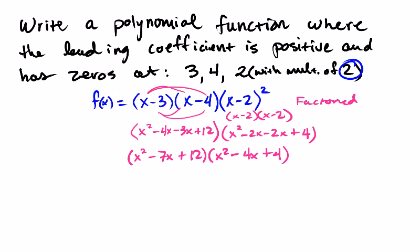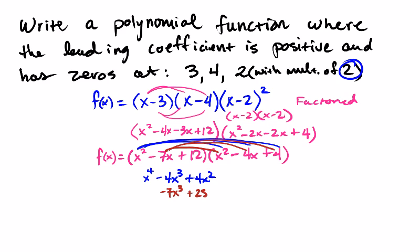And now you're going to have to foil some more. Well, not foil, but you're going to have to multiply it out. And the way you do that is you would multiply everything in the first by everything in the second. So this x² is going to get multiplied by every single thing over there. So it would be x⁴-4x³+4x². And then you're going to do -7x gets multiplied by everything. So I'm going to multiply -7x³+28x²-28x.